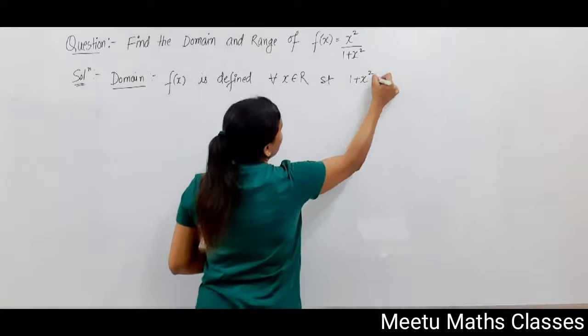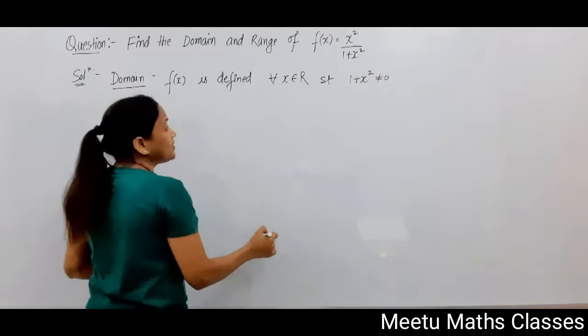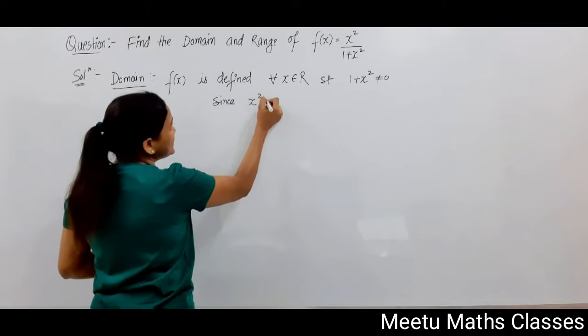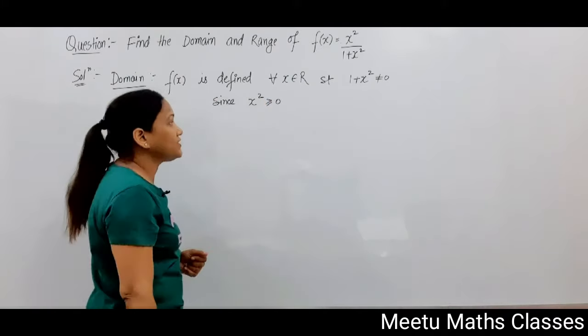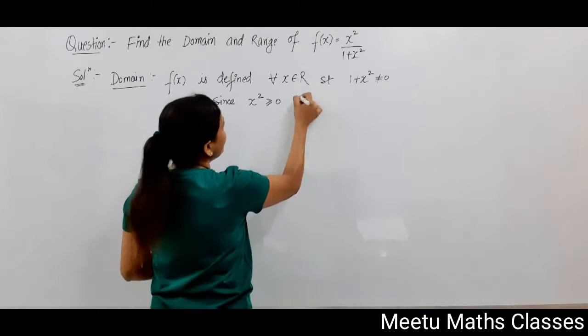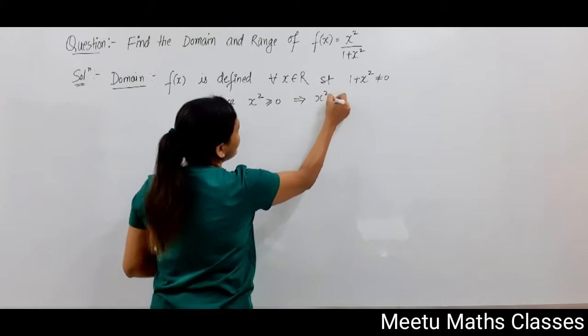Now you can see that since x² is always greater than or equal to 0, if you add 1 to both sides, then it will imply that x² + 1 will always be greater than or equal to 1.